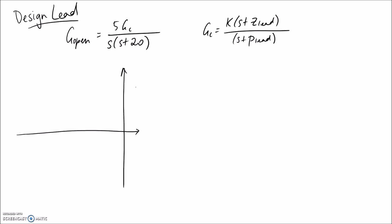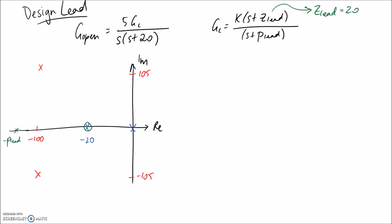If we draw out what our root locus diagram is going to look like: we have the pole at zero, the pole at negative 20, and the desired poles — shown in red — at negative 100 plus or minus 105. Since I'm cancelling the pole at negative 20, I'm introducing a zero there, setting Z_lead to 20. Now we need to figure out what the corresponding P_lead needs to be. I'll place it somewhere out here and solve for its location.